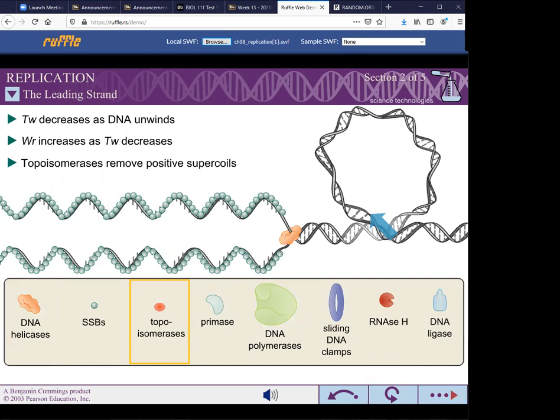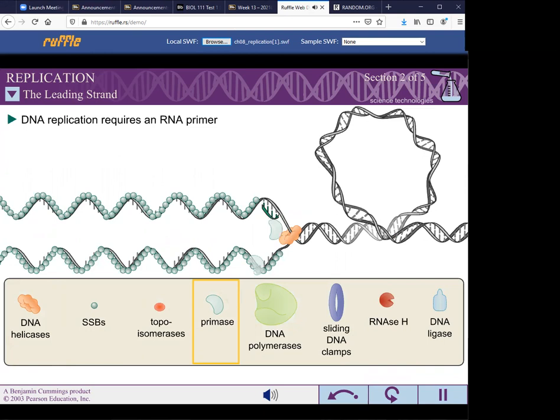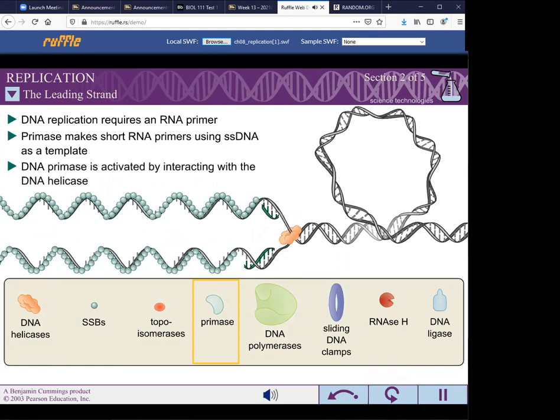DNA replication requires an RNA primer to begin. Primase is a specialized RNA polymerase which makes short RNA primers using single-stranded DNA as a template. Primase is activated by association with other DNA replication proteins, such as DNA helicases.